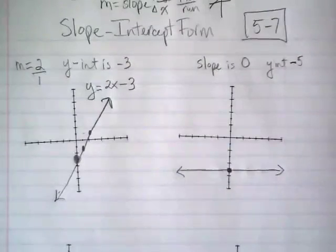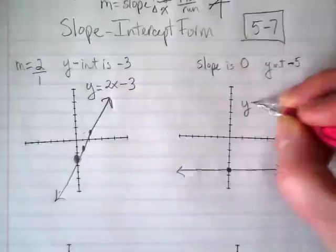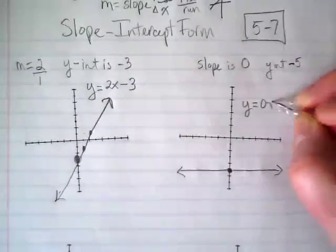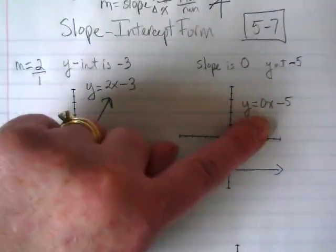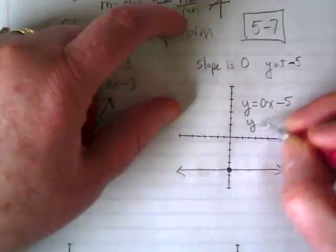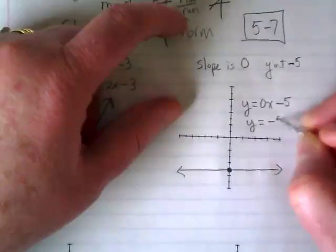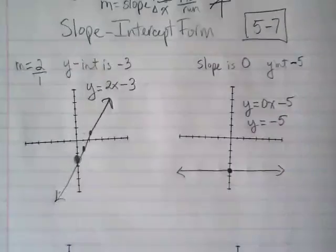There is an equation for this. Y equals 0x minus 5. What's 0 times x going to be? 0. So we can just rewrite this as y is equal to negative 5.